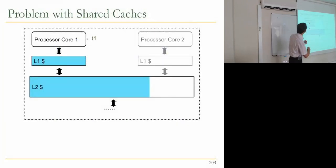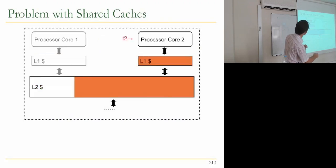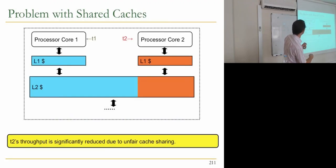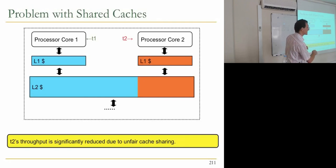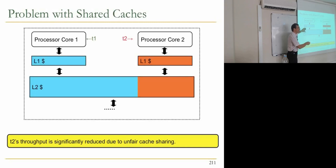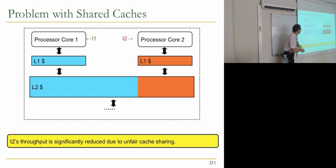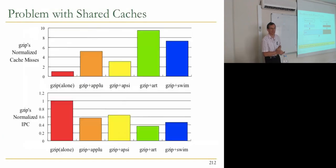The problem: with a shared cache, one application may need a large portion of cache. When they run together, one application — because it has more 'muscle' — evicts the blocks of the other application, significantly reducing the other application's throughput due to unfair cache sharing. We'd like to prevent that.